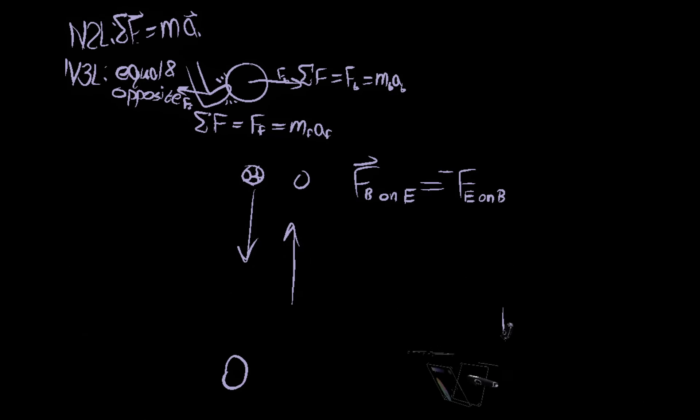So how come the ball jumps all the way back up, whereas the earth stays stationary? Well, these forces, it's equal to the mass. So the ball on the earth is equal to the mass of earth times the acceleration that the earth feels. This is equal to the inverse of the mass of the ball times the acceleration of the ball.